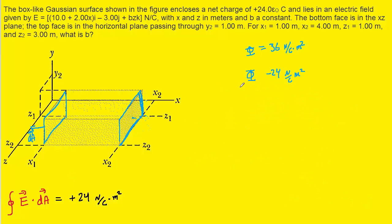Adding the flux through the right face and the left face together gives us the total flux through those two faces: 36 plus negative 24 equals 12 newtons per coulomb meters squared. We're about one-third of the way through the problem. Next we'll do the top and the bottom surfaces.